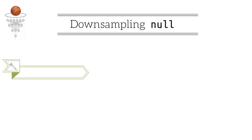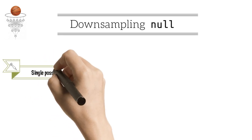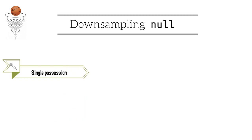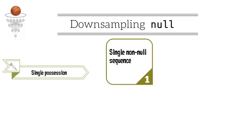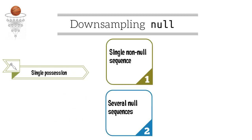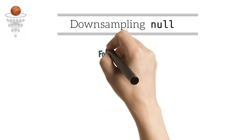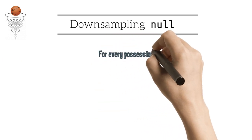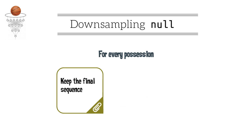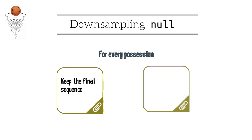One of the challenges is the fact that every possession provides a single terminal sequence and several null sequences, leading to a highly unbalanced dataset. For this, we use a downsampling approach where, for each possession, we uniformly sample k non-terminal sequences.